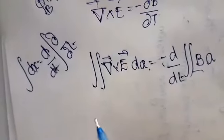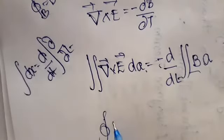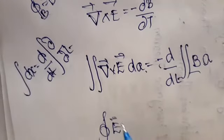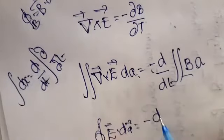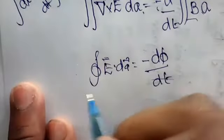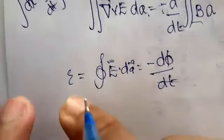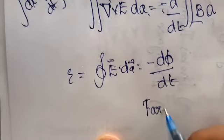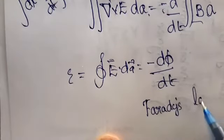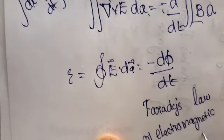Since the magnetic flux φ_B equals B vector dot A vector, applying this result gives: the closed integral of E vector dot dL vector equals negative dφ/dt. This is epsilon — the induced EMF — showing that a change in magnetic flux causes an induced EMF. This is called Faraday's law of electromagnetic induction.